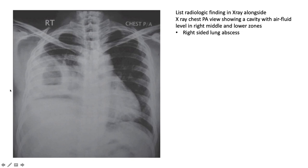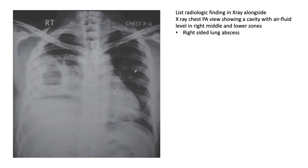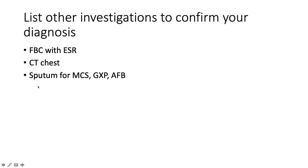This PA view shows a cavity with an air-fluid level in the right middle and lower zones — a right-sided lung abscess. To confirm: full blood count with ESR (should be high), CT of the chest, and sputum for microscopy, culture and sensitivity, GeneXpert, and AFBs.